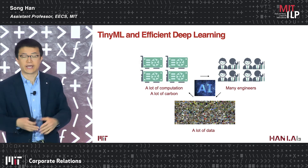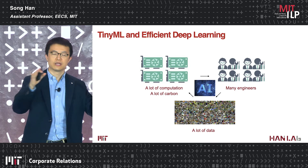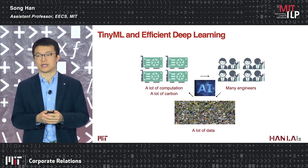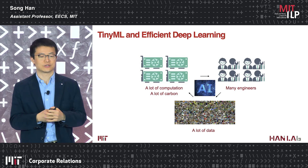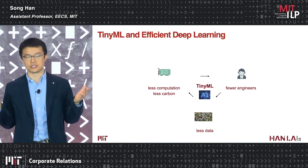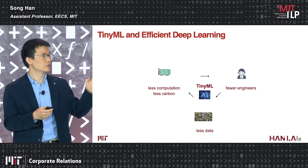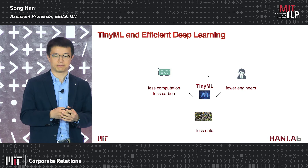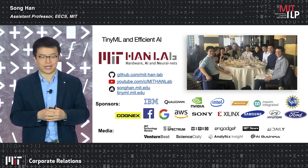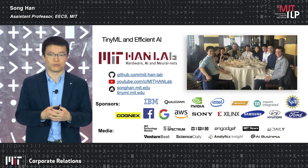In summary, TinyML and efficient deep learning used to require a lot of computation, carbon emissions, and engineering effort, making it difficult to deploy on edge devices. There is a huge demand for deploying AI on the edge to save cost, preserve privacy, and reduce latency. Our techniques reduce computation, engineering effort, and data requirements using automated hardware-aware neural architecture search tools, enabling not only inference but also on-device training with less data.